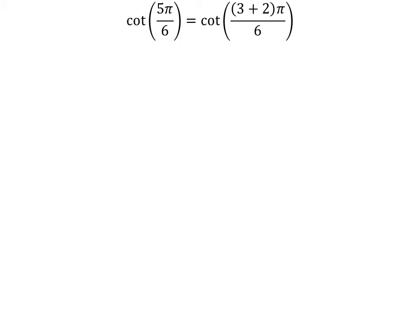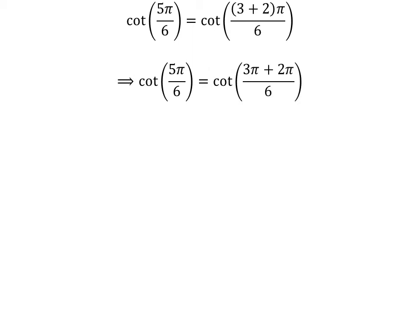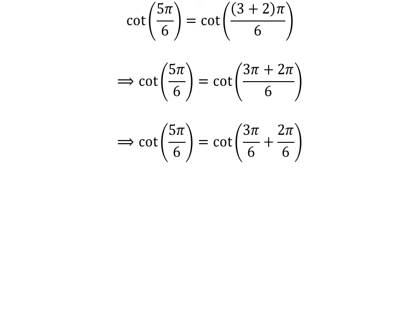Let us apply the second method to find the value of cotangent of 5 times pi upon 6. We know 3 plus 2 is equal to 5, so cotangent of 5 times pi upon 6 is equal to cotangent of (3 plus 2) times pi upon 6. Expanding the numerator, we get cotangent of 3 times pi plus 2 times pi upon 6. The fraction 5π/6 can be expressed as the sum of 3π/6 and 2π/6. Cancelling the common factor gives us cotangent of 5 times pi upon 6 is equal to cotangent of half of pi plus pi upon 3.